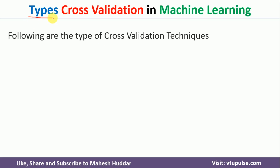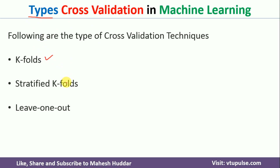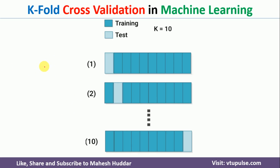The first type is called k-fold cross-validation. The second is stratified k-fold cross-validation, the third is leave-one-out cross-validation, and the fourth is leave-P-out cross-validation. In k-fold cross-validation, we divide the entire dataset into k folds. For example, if k is equal to 10, the entire data is divided into 10 folds. We will train the model 10 times because the value of k is 10.